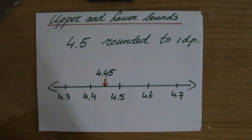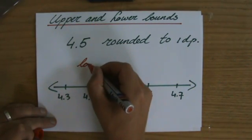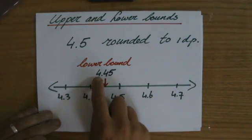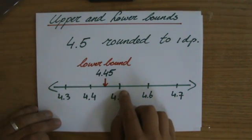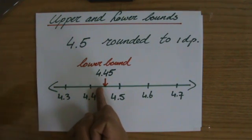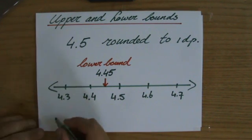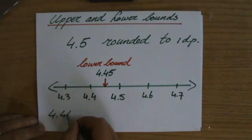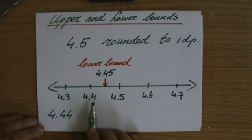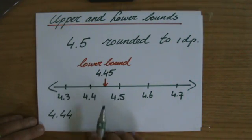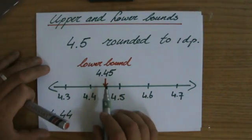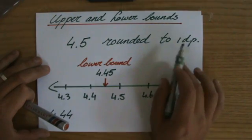That is going to be my lower bound — the lowest possible number my number can be for it to become 4.5, correct to one decimal place. Because if I go to 4.44 and I round that to one decimal place, that's slightly smaller than 4.45, and it would go to 4.4 to one decimal place and not to 4.5. So 4.45 is my lower bound — it's the smallest possible value my number can have such that if I would round it to one decimal place, it becomes 4.5.